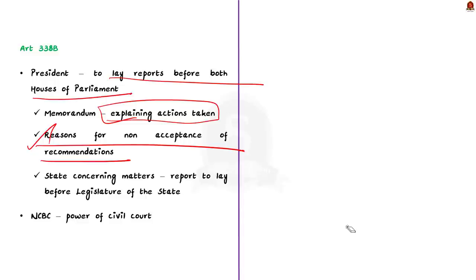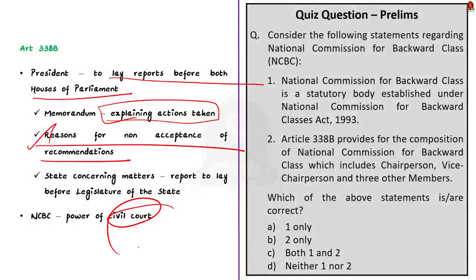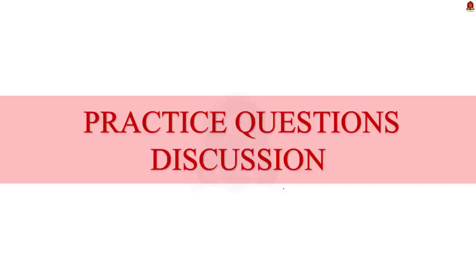The commission has all the powers of a civil court while investigating matters relating to safeguards provided for the socially and educationally backward classes. In this news article discussion, we saw in detail about NCBC — their composition, functions and reports. With these learned points, let us move on to the practice question discussion.